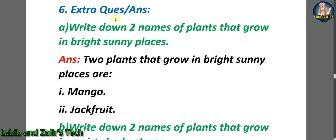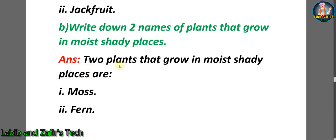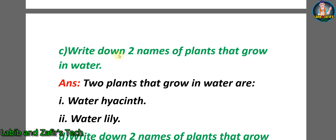Now let's go through some extra question answers. Question A: write down two names of plants that grow in bright sunny places. Answer: number one — mango; number two — jackfruit. Question B: write down two names of plants that grow in moist shady places. Answer: number one — moss; number two — fern.